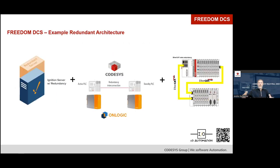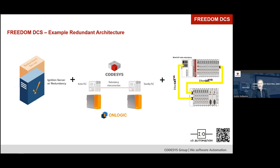Here's the same example but with a redundant architecture. Ignition Server has redundancy, CODESYS Runtime has redundancy. We can put two OnLogic industrial Raspberry Pis — just using this as an example to show extreme capability — and with EtherCAT cable redundancy, you now have a redundant SCADA, plant-wide powerful solution, redundant controllers, and redundant EtherCAT IO network cable redundancy.